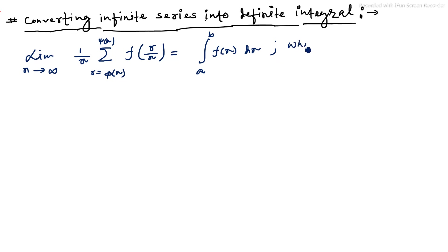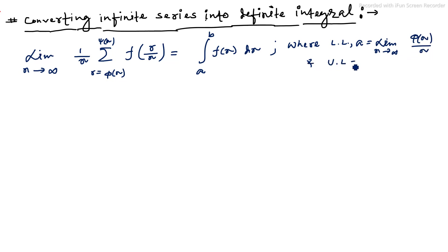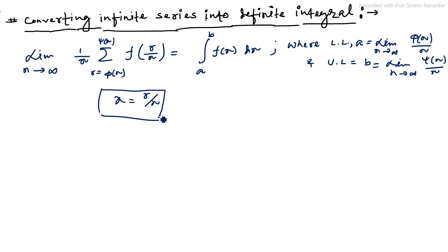Where the lower limit a equals limit n tends to infinity of φ(n)/n, and the upper limit b equals limit n tends to infinity of ψ(n)/n. And here we take x equal to r/n. This is the formula.